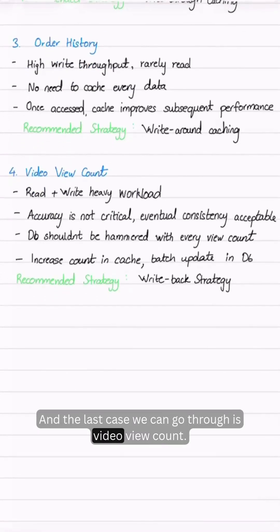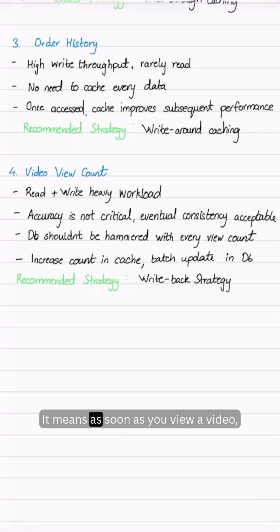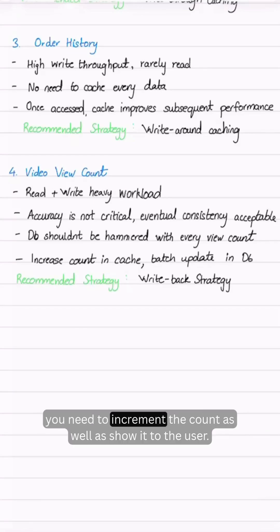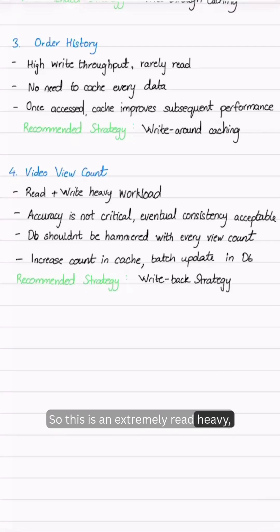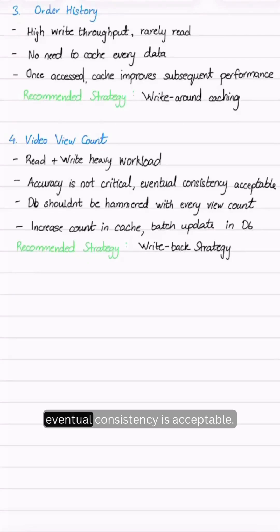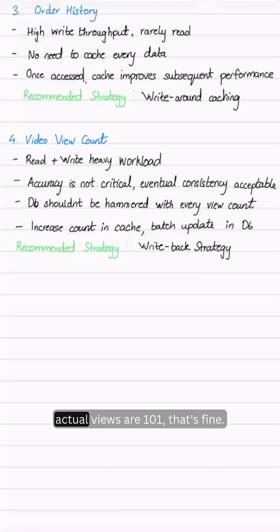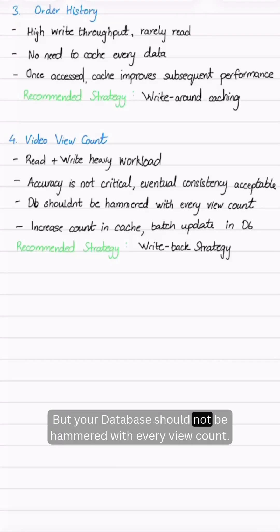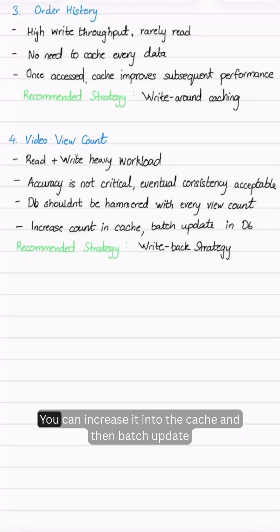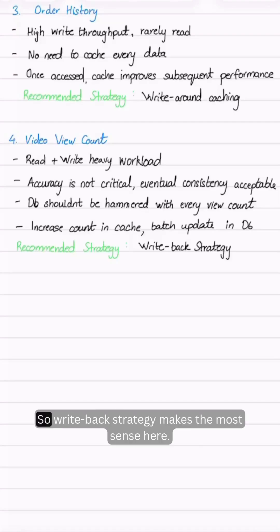The last scenario is video view count. As soon as a user views a video, you need to increment the count and show it to the user. This is an extremely read-heavy and write-heavy workload. Accuracy is not critical — eventual consistency is acceptable. If you show 98 views and the actual count is 101, that is fine. But your database should not be hammered with every view count. You can increment it in the cache and then batch update into the database. So write-back strategy makes the most sense here.